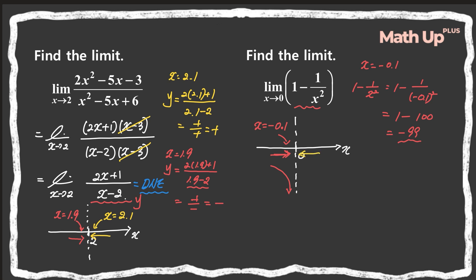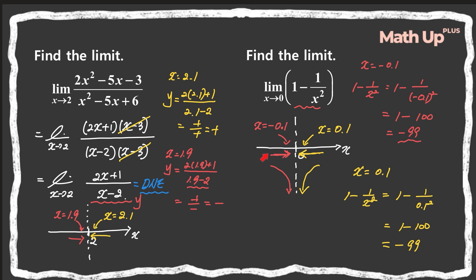What if x approaches 0 from the right-hand side? Let's say x is positive 0.1. Then 1 minus 1 over x squared equals 1 minus 1 over 0.1 squared, which is 1 minus 100, so that's negative 99 again. That means as x approaches 0 from the right-hand side, the function will also decrease to negative infinity. So from both directions, the function approaches negative infinity.